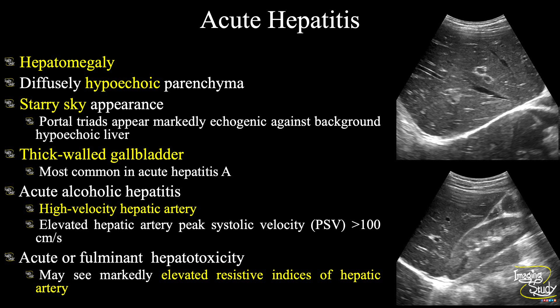In alcoholic hepatitis, on color Doppler you will see high-velocity flow in the hepatic artery — peak systolic velocity more than 100 centimeters per second. In acute or fulminant hepatotoxicity, there will be an increased resistive index (RI) of the hepatic artery on Doppler.